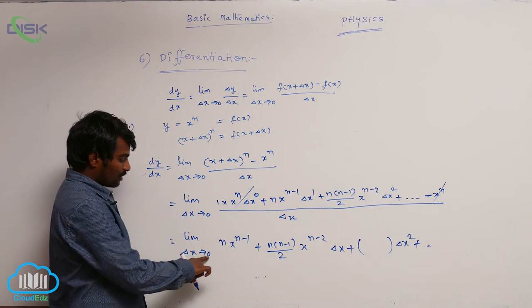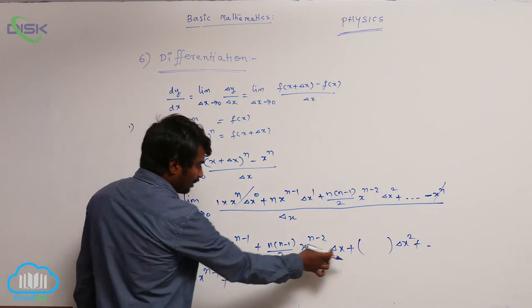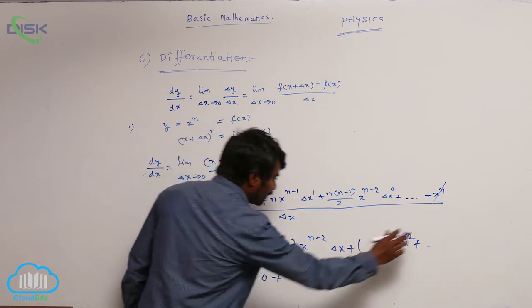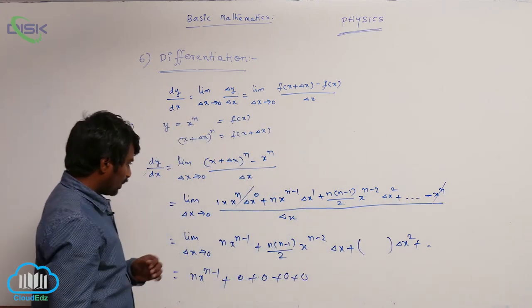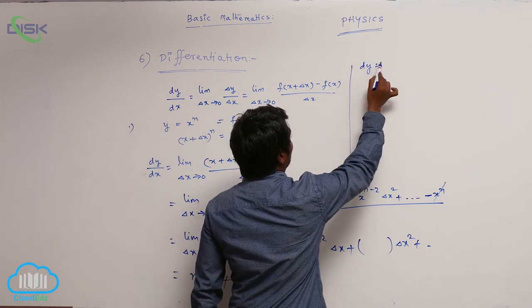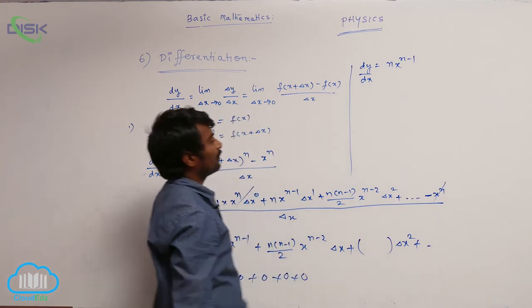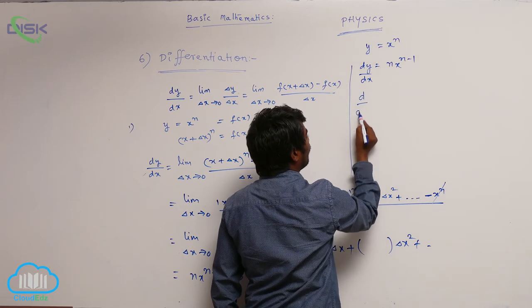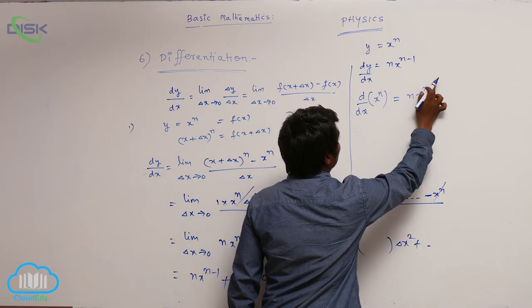Now, as delta x tends to 0, substituting the value: n times x power n minus 1 remains, while delta x becomes 0, so that term vanishes. Delta x squared is again 0, delta x cubed is again 0, and so on for all higher powers. So what we get is dy by dx is equal to n times x power n minus 1. That is the result, where y is equal to x power n.